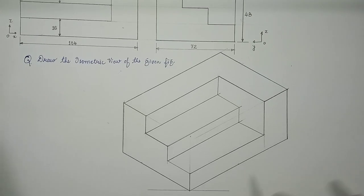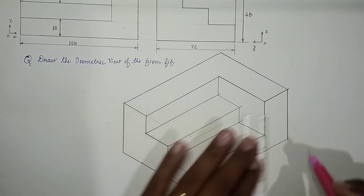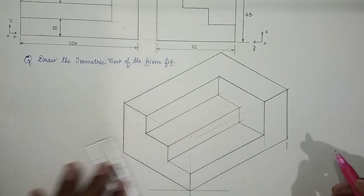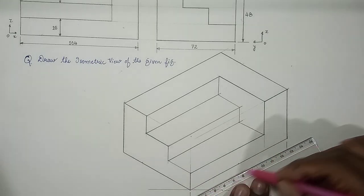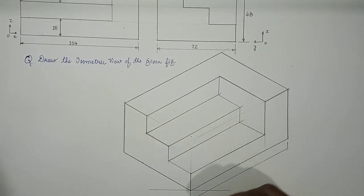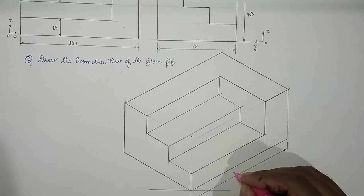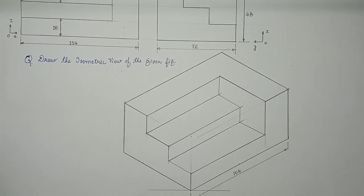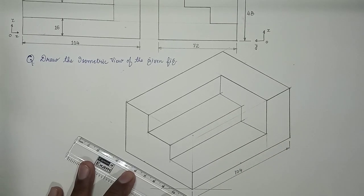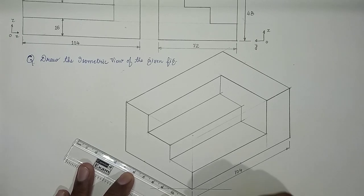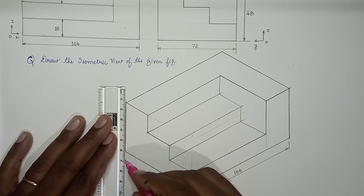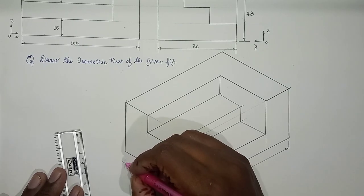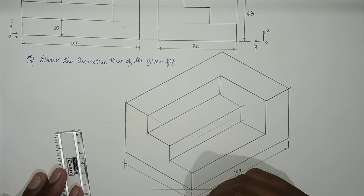And now we can get the dimensions. So 104 along x, along y we have an extension line, this is almost 70.